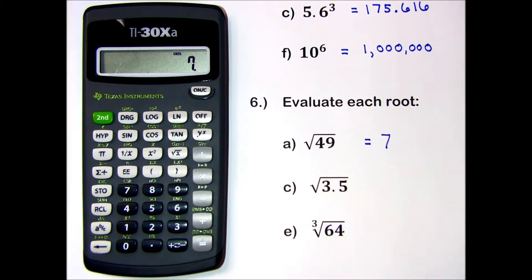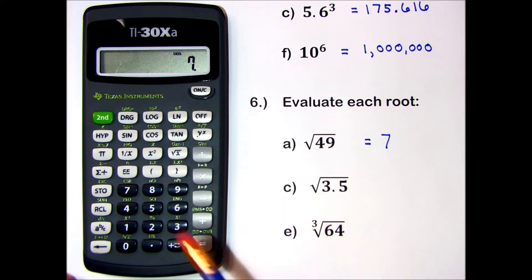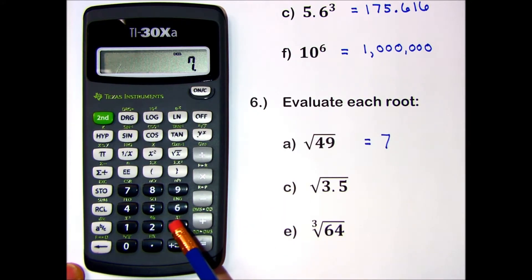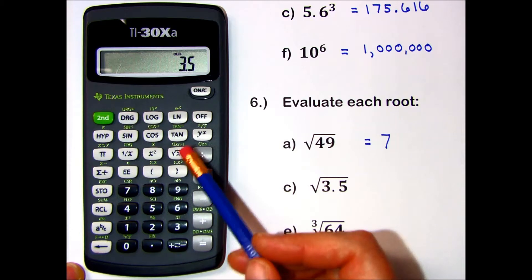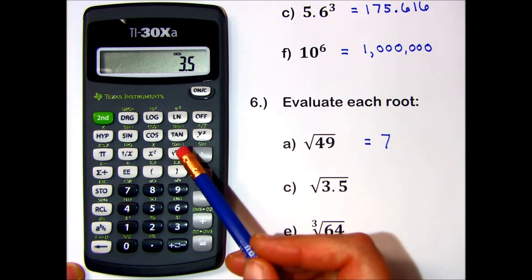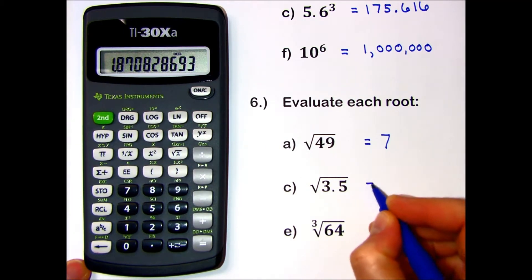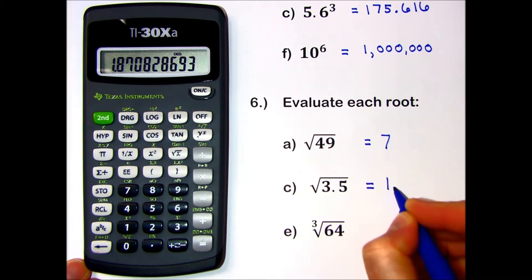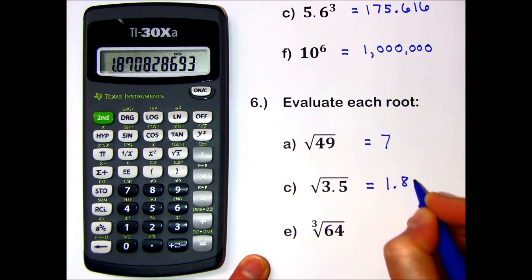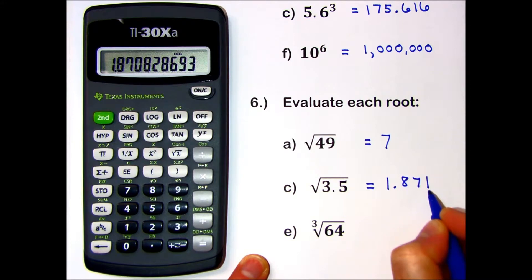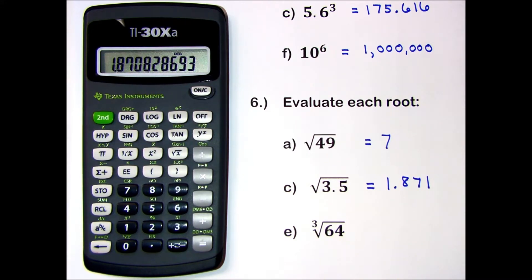We'll try a decimal number, 3.5. I enter my value first — 3.5 — and then I press my square root key, and my answer is 1.871 when I round to the requested 3 decimal places.